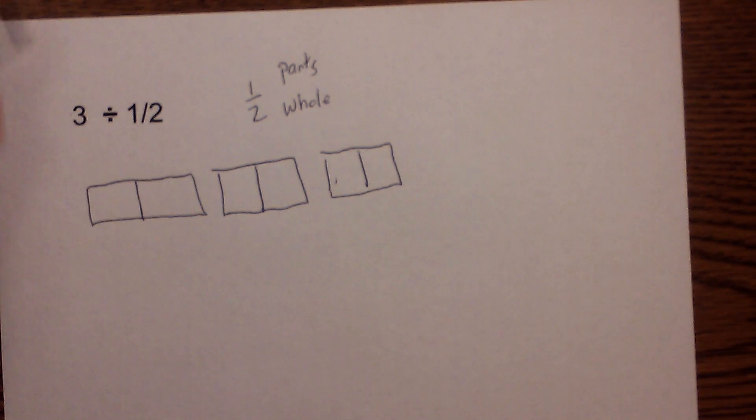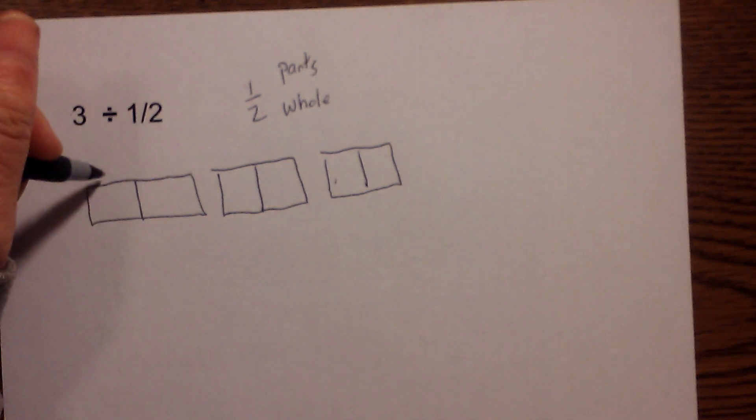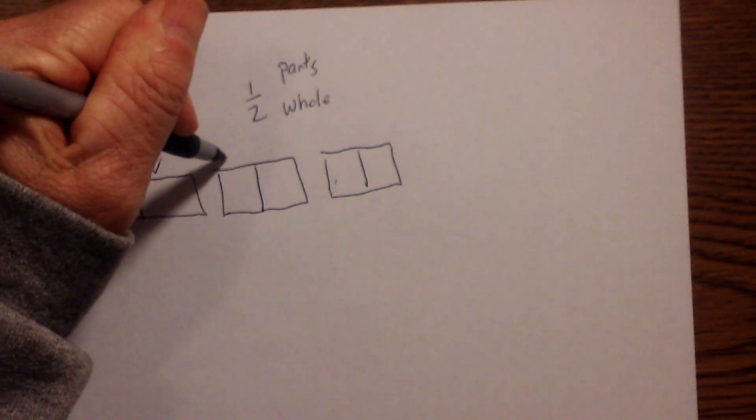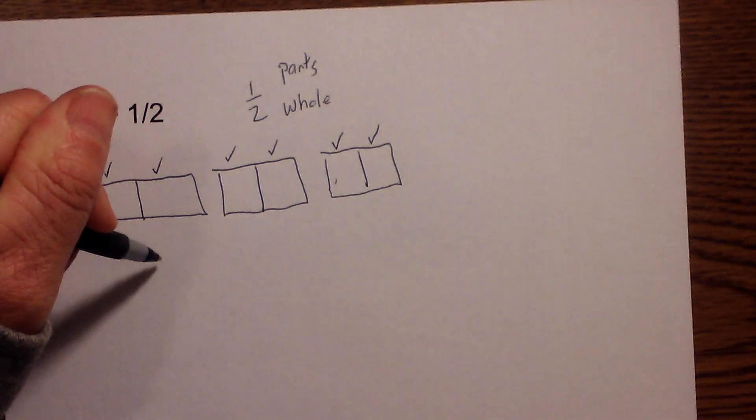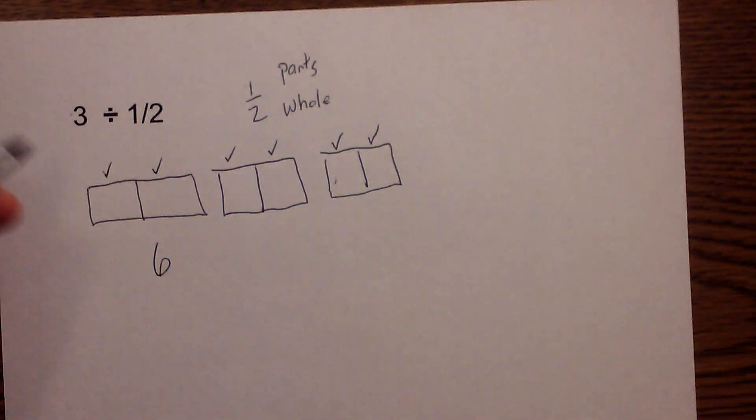Now I want to know how many of these one-halves do I have in three. I just count. I just need one to make one-half. I have one, two, three, four, five, six. I have six one-halves that will go into the three.